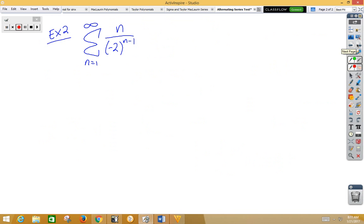Let's do a second example. It's clearly alternating because we have a negative value there, and as we plug in n is 1, 2, 3, 4, it's going to alternate.